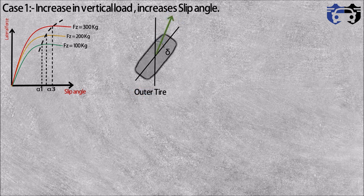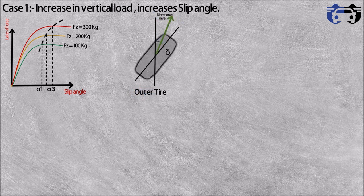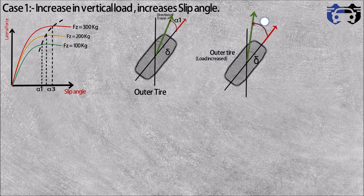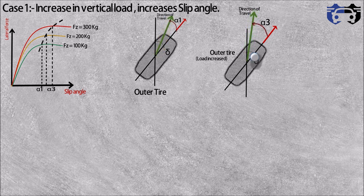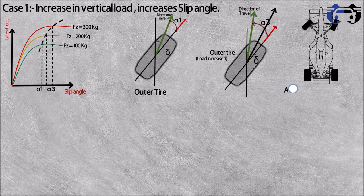Here is the tire contact patch with the tire traveling in a direction and making a slip angle alpha-1. As the load on the tire increases, it leads to an increase in slip angle to alpha-3. This changes the direction of travel of the tire to the green arrow. Comparing with the previous figure, on turning the same steering angle delta, the direction of travel in the loaded tire case is less. So in loading of the outer tire, we have to increase the steering angle delta so that the tire direction of travel changes to the black arrow. Since we want to increase the outer tire steering angle delta, we will use anti-Ackermann geometry.